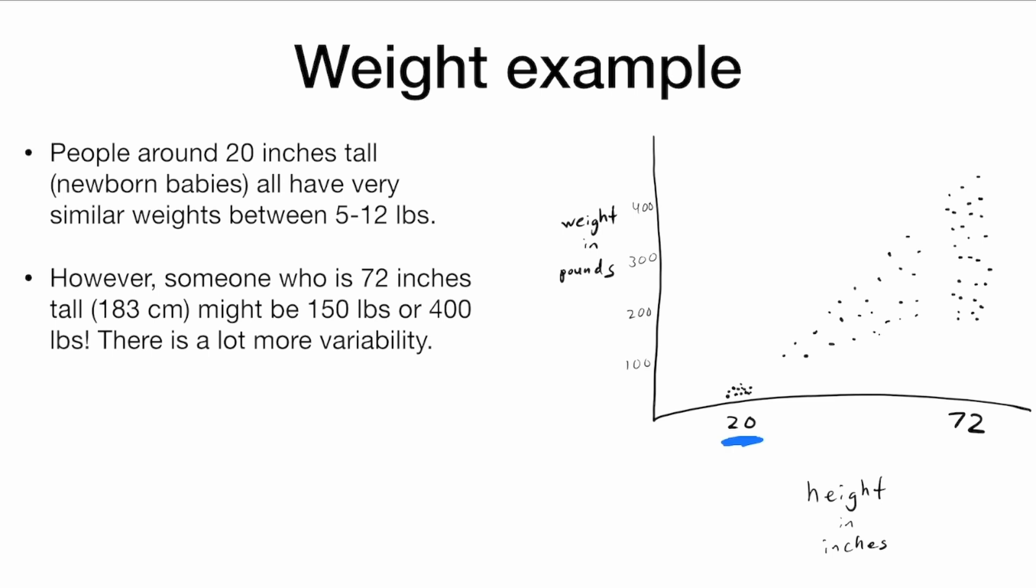However, someone who is a fully grown adult male who is 6 feet tall, their weight can vary significantly. They might be 150 pounds, they might be 400 pounds. There is a lot more variability in their weight.